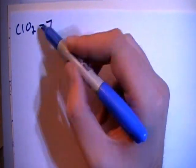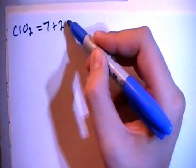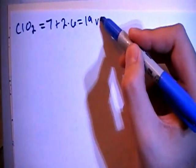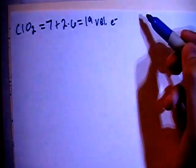So chlorine dioxide is going to give us 7 valence electrons from the chlorine plus 2 oxygens, each with 6 valence electrons, for a total of 19 valence electrons.